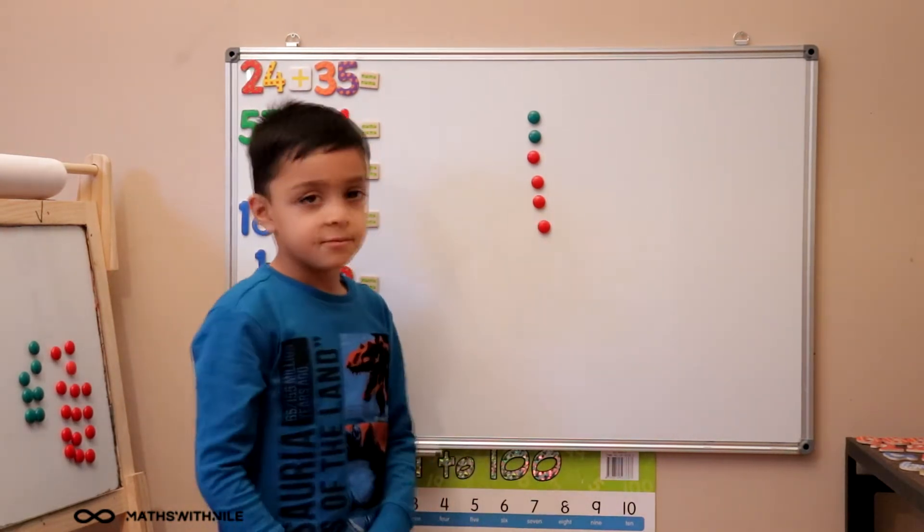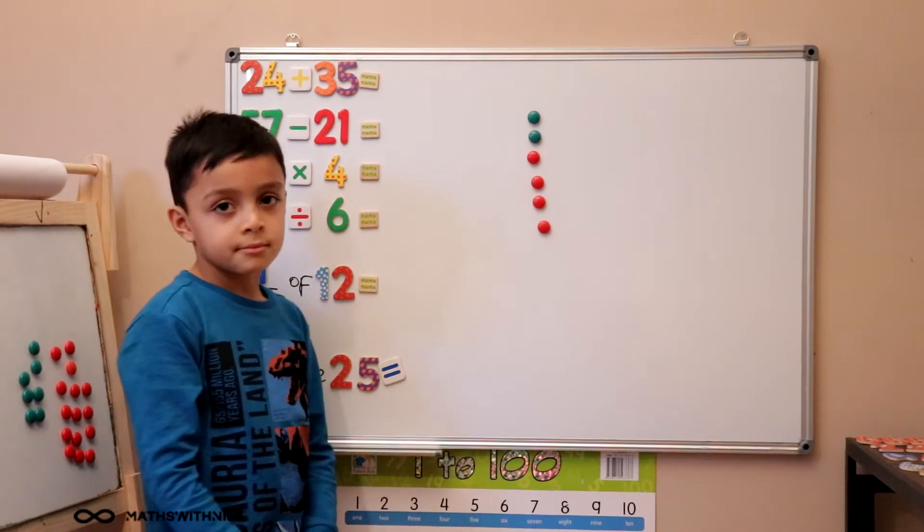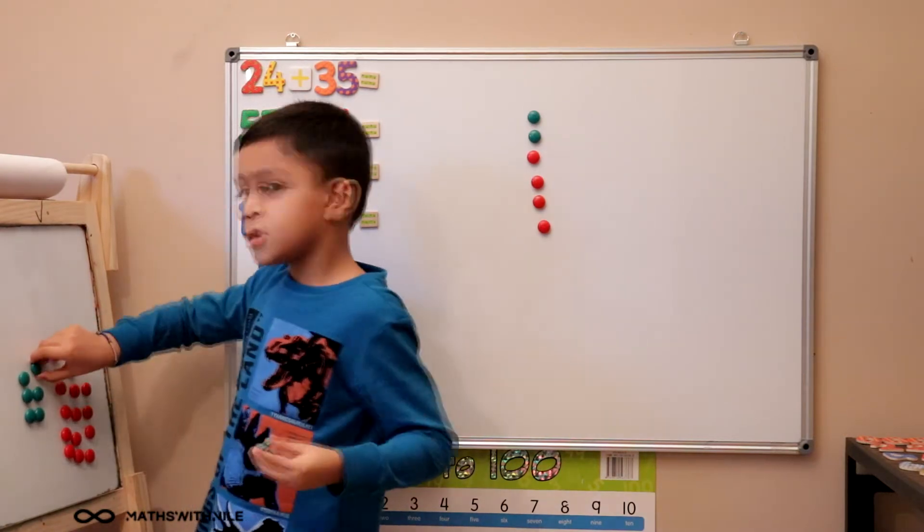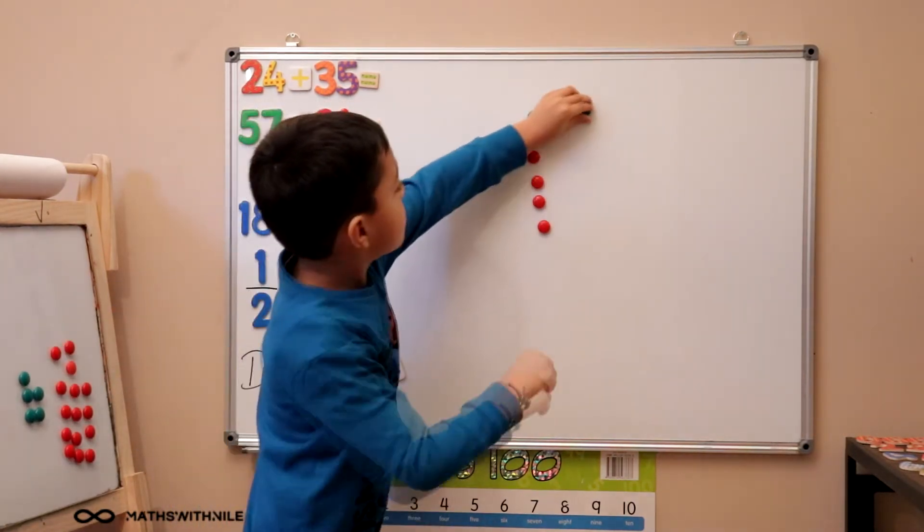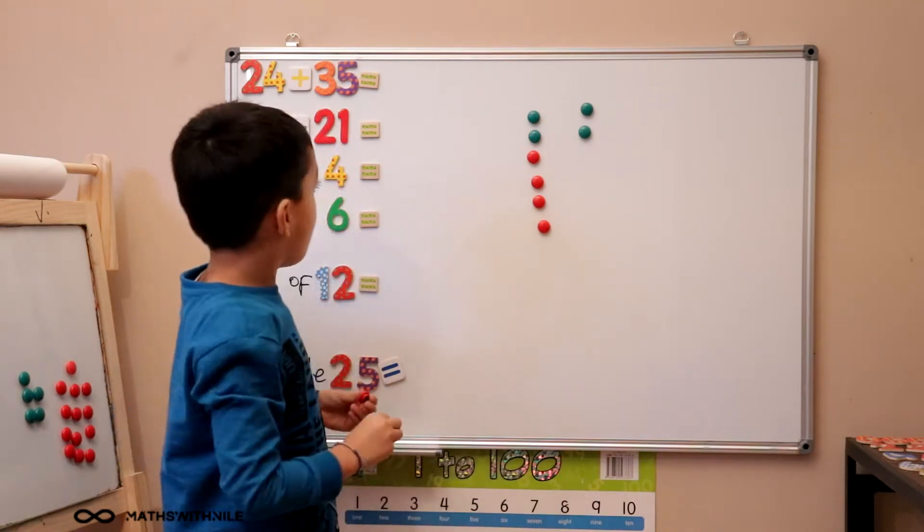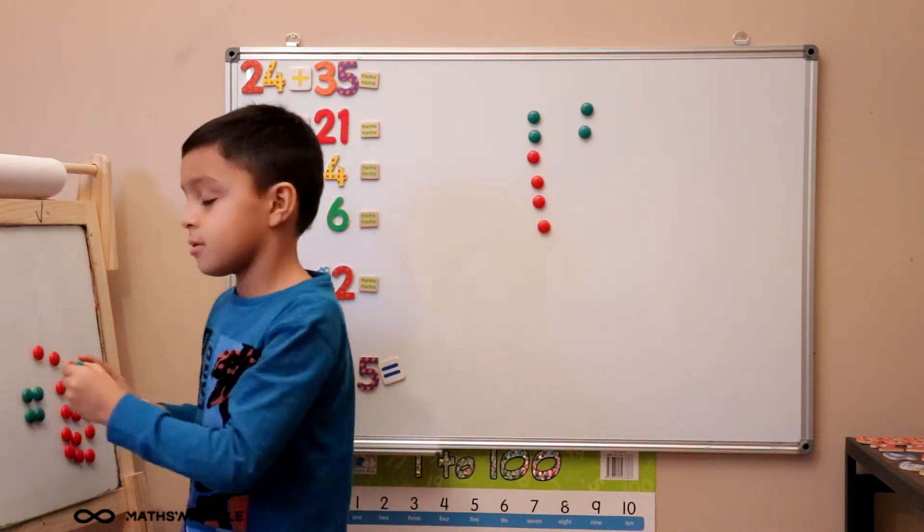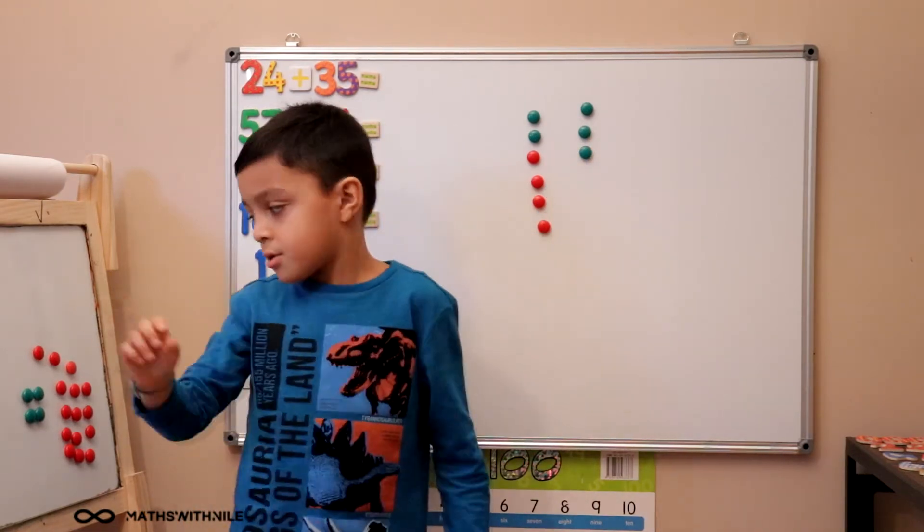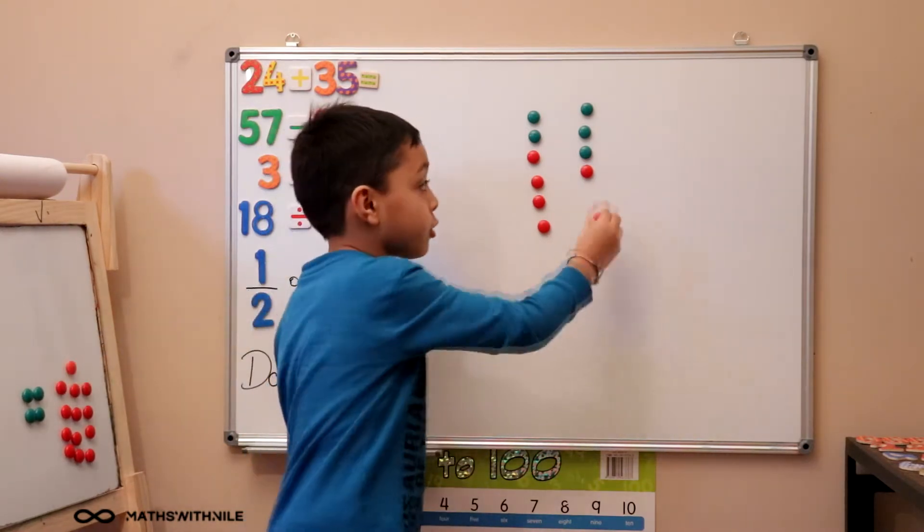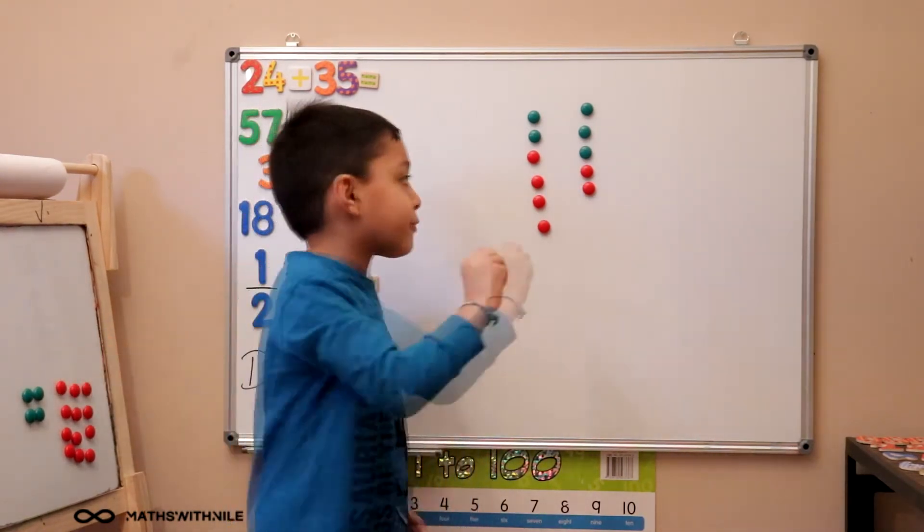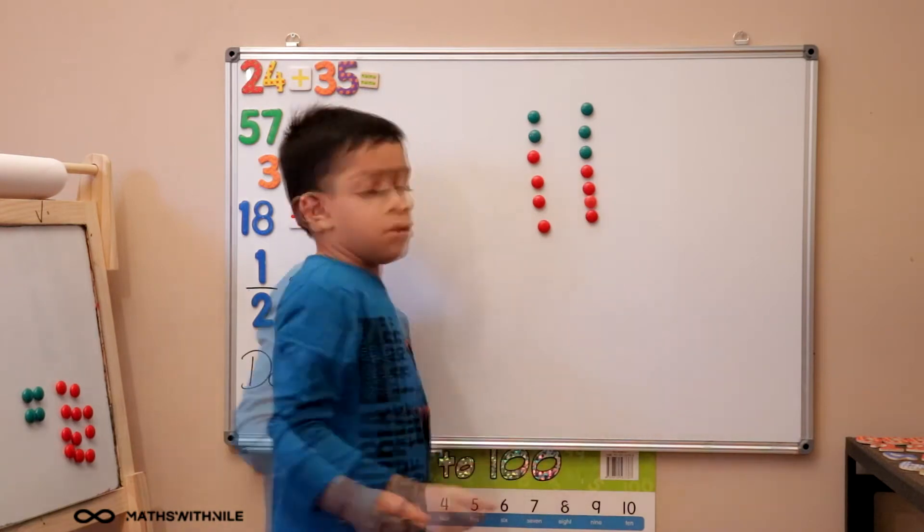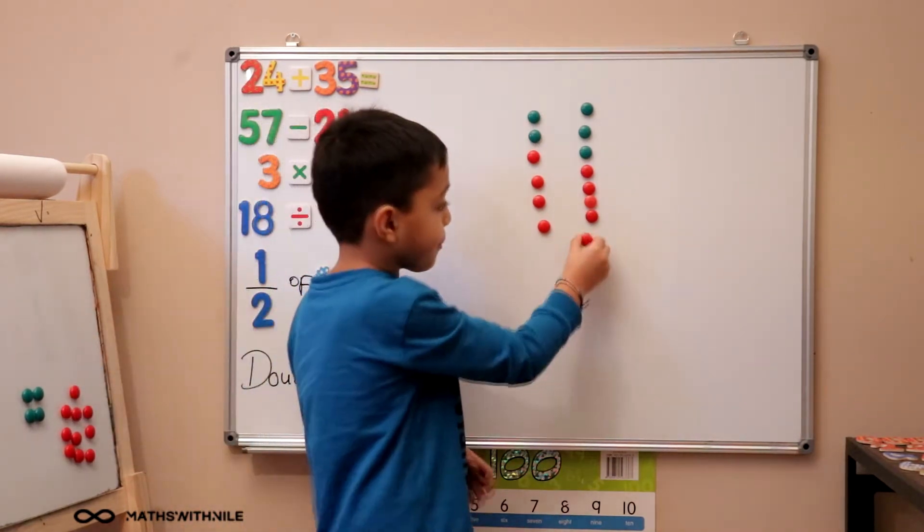Very good now. And now we're going to add 35. Can you try and take more than one counter at a time? So count it when you're taking them from the board. 10, 20, 10, 20, 1, 2, 3, 5. We want 35. 30. And count out the five there. 1, 2, 3, 4, 5. Very good.